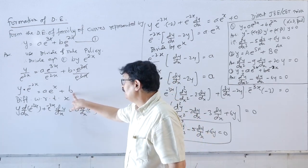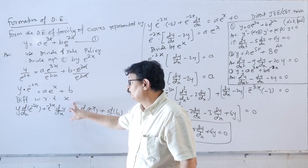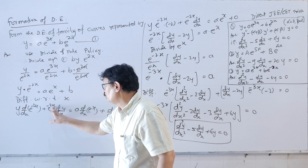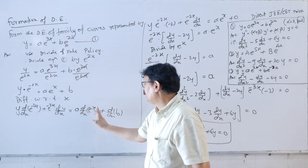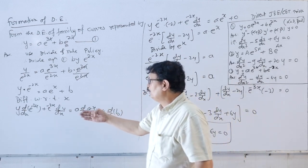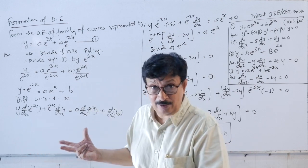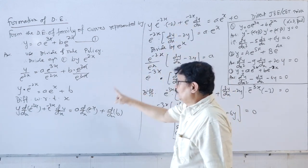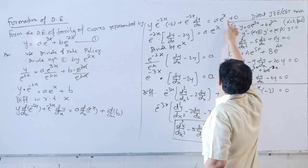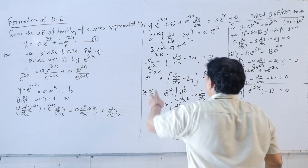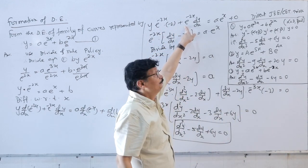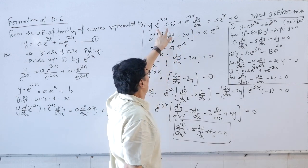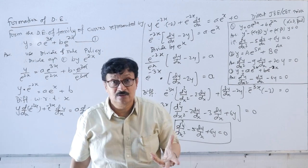Differentiating y·e^(−2x) = a·e^x + b with respect to x using the product rule on the left: y·e^(−2x)·(−2) + e^(−2x)·(dy/dx) = a·e^x + 0. Taking e^(−2x) common: e^(−2x)·[dy/dx − 2y] = a·e^x. This gives dy/dx − 2y = a·e^x. B has been eliminated. Now we must eliminate a.